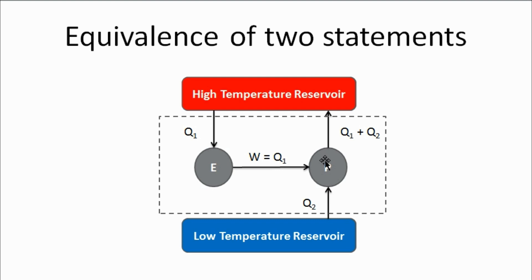This is to say: if we violate the Kelvin-Planck statement, the Clausius statement automatically gets violated. If this system had consumed some work, it would have delivered energy higher than Q2. But here, Q2 is taken from the low temperature reservoir and Q2 is received by the high temperature reservoir — therefore it is a straightforward violation of the Clausius statement.